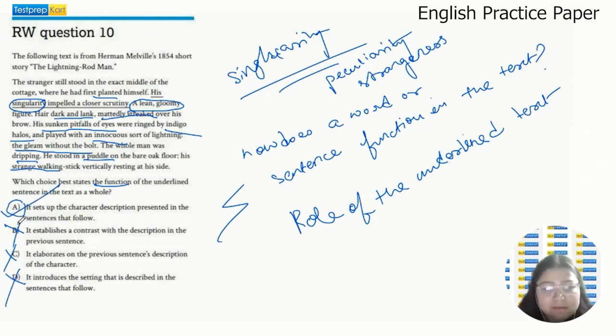A makes perfect sense because the description of the person is very strange or singular, which forces—impelled means compel or motivate—which makes you want to take a closer look. He's so strange that you want to take a closer look at the man. All right.